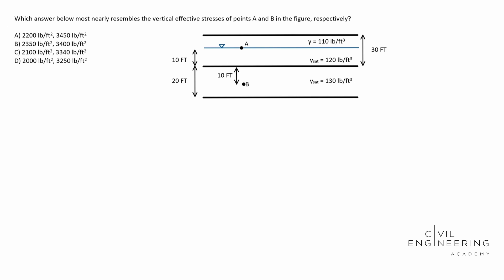So today we have a soil mechanics problem. And in particular, this is an effective and total stresses problem. Today we're going to solve for the vertical effective stress of points A and B here. Let's go ahead and read the question. It says which answer below most nearly resembles the vertical effective stresses of points A and B in the figure respectively.